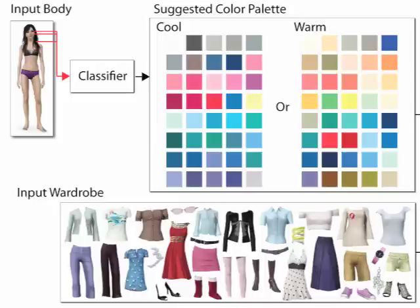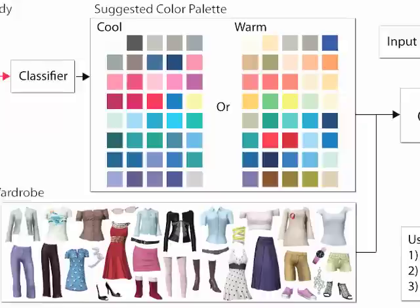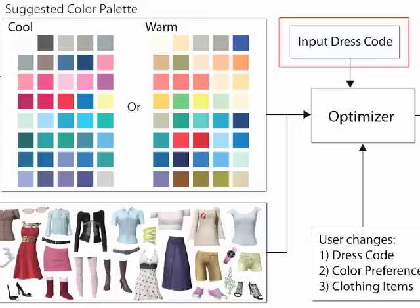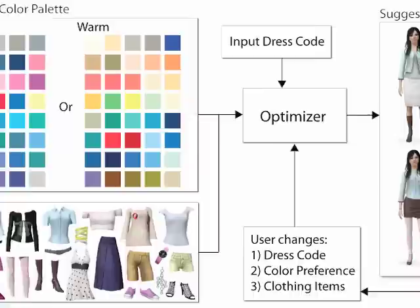The user also specifies a set of clothing items as an input wardrobe and then specifies a dress code. The dress code encodes a probabilistic relationship among different clothing items in the form of a Bayesian network. The network is trained using example fashion images that are representative of the dress code. Given the input information, our system can automatically suggest multiple outfits based on a number of criteria encoded as cost terms in the objective function.